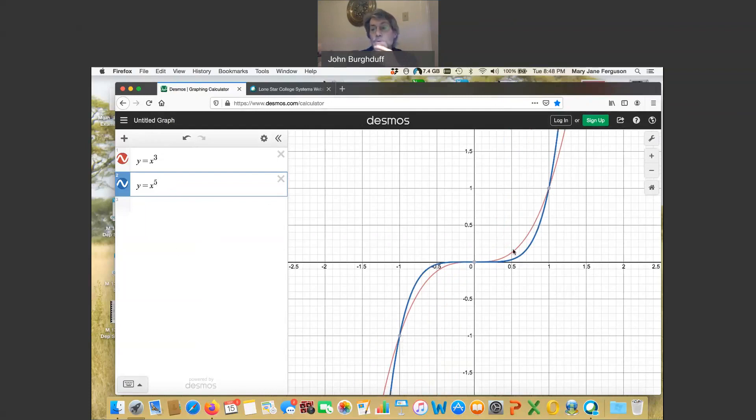However, y equal x cubed, and again, that's the red graph, is not as flat towards the middle as y equal x to the fifth is. Think about that for some values of x like 1 half. So 1 half to the third power is 1 eighth. That's pretty small. But 1 half to the fifth power is 1 over 32. That's really small.